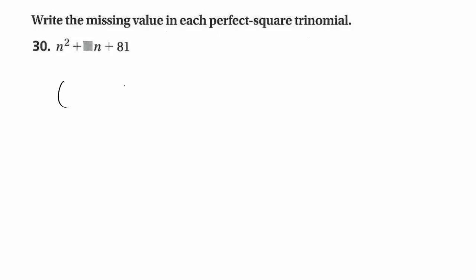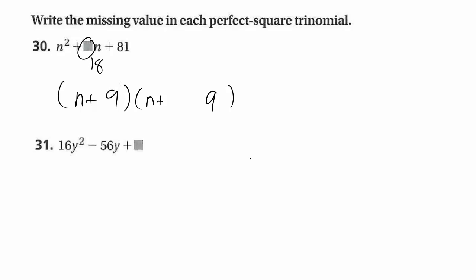For this next one, they say it's a perfect square trinomial. A perfect square means something like 9 times 9 equals 81. So that means this number has to be an 18 — because it's twice the product of the square roots of the first and last terms.